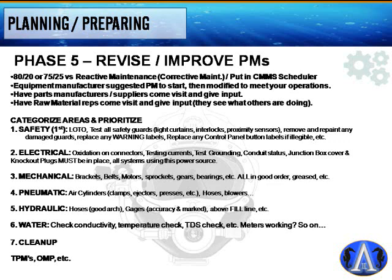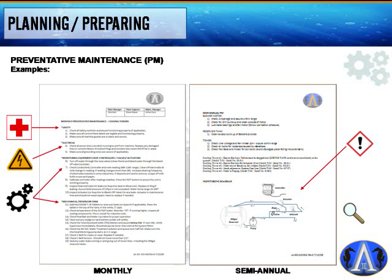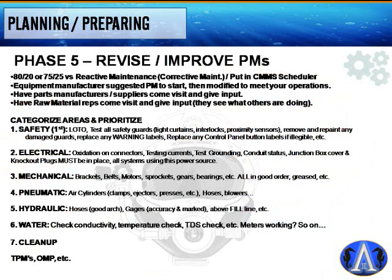Categorize and prioritize PMs. Safety always comes first: test lockout/tagout, all safety guards like curtains, interlocks, and proximity sensors; repaint damaged guards; replace worn warning labels and control panel button labels — this is OSHA-required. A good practice is to have technicians clean an area first so any leaks stand out clearly if they aren't already obvious.